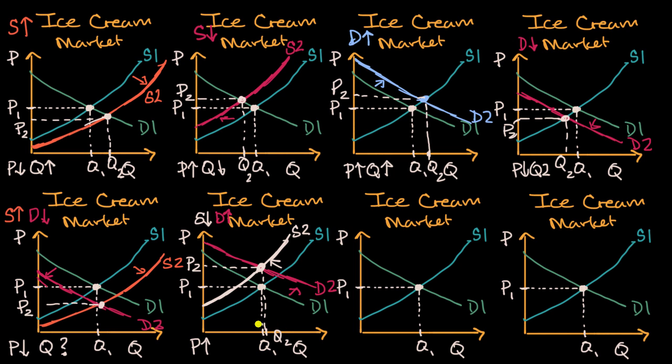Well, once again, depending on how you draw it, I could make the quantity go up a little bit. I could make it stay neutral. I could make it go down. So you would actually have to know the specifics of those curves, exactly their shapes, in order to figure out what happens to quantity. You can't make a judgment just based on these general upward and downward sloping curves.